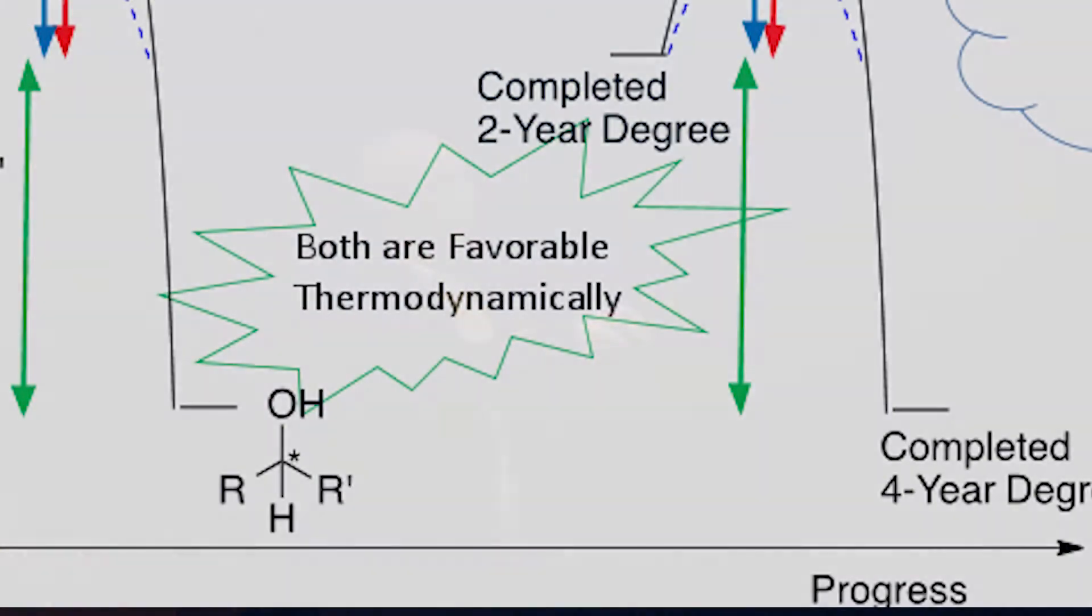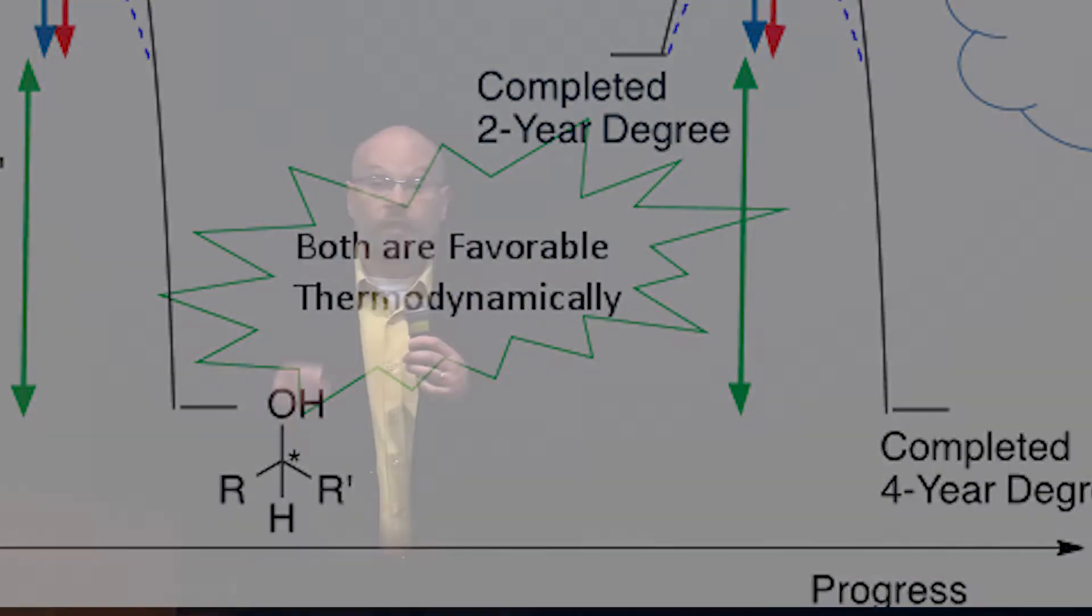This is a thermodynamically favorable reaction, and I believe students who are completing their two-year degree and more and more are going to be doing that at a Chattanooga State type school because of the Tennessee Promise. It is thermodynamically favorable for them to come to UTC and finish their four-year degree because they've invested in their higher education.